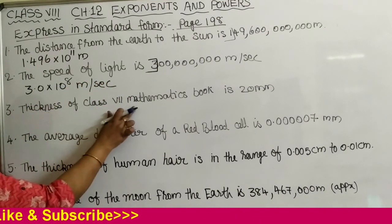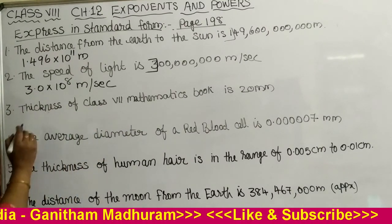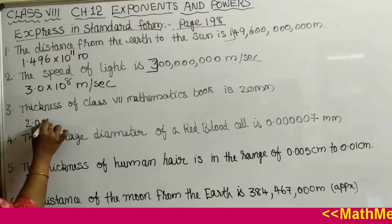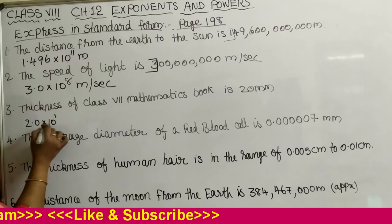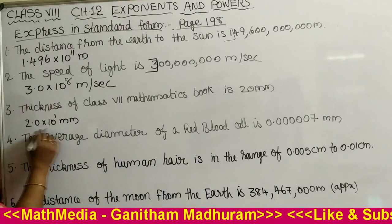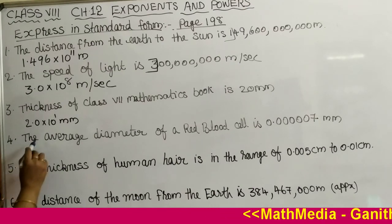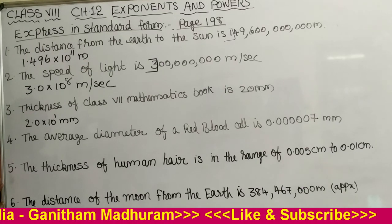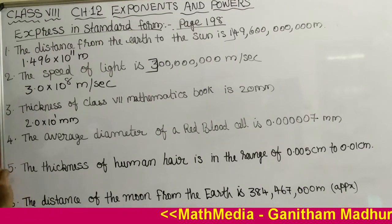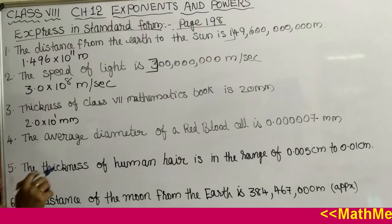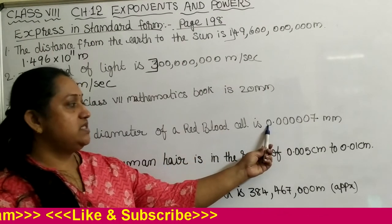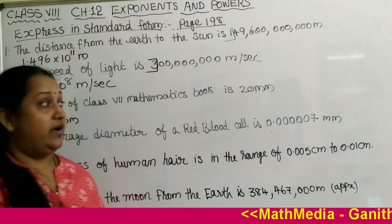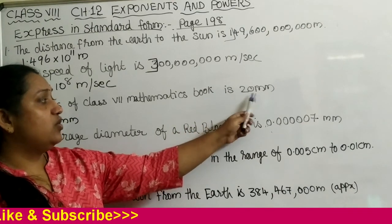The thickness of a Class 7 mathematics book is 20 mm, which can be written as 2.0 into 10 raised to 1 mm. Similarly, the average diameter of a red blood cell is 0.000007, so after the decimal point we have 6 digits. All other given values are whole numbers, but here a decimal number is given.